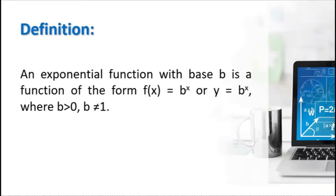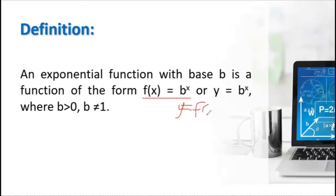By definition, an exponential function with base b is a function of the form f(x) = b raised to x, or it can be written as y = b raised to x, since y is the same as f(x). The condition is that the base b must be greater than 0 except 1.